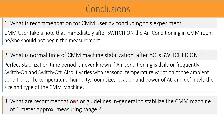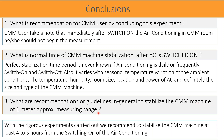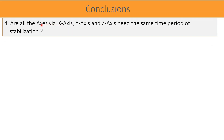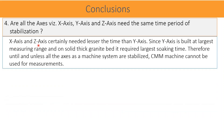Question 3: What are the general guidelines to stabilize a CMM machine of approximately 1-meter measuring range? Answer: Based on rigorous experiments, we recommend stabilizing the CMM machine for at least 4 to 5 hours from the switching on of the air conditioning unit. Question 4: Do all axes — X, Y, and Z — need the same stabilization time? Answer: X-axis and Z-axis certainly need less time than the Y-axis. Since the Y-axis is built at the largest measuring range on a solid thick granite bed, it requires larger soaking time. Therefore, until all axes as a machine system are stabilized, the CMM machine cannot be used for measurement.